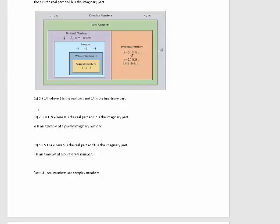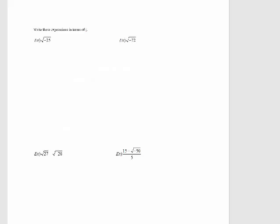5, which can be rewritten as 5 plus 0i, is also a complex number, where 5 is the real part and 0 is the imaginary part. So 5 is an example of a purely real number, since 0 is the imaginary part. We can also say that all real numbers are complex numbers. However, I cannot say that all complex numbers are real numbers, since 7i is a complex number but not a real number.